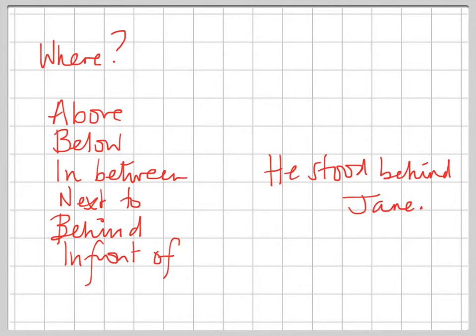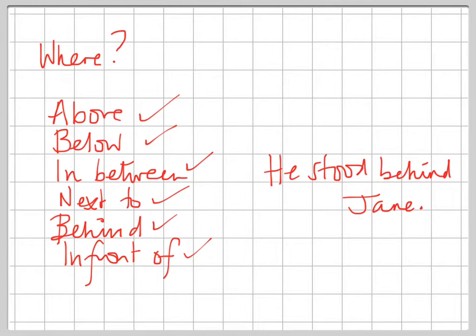The 'where' prepositions include words like above, below, in, between, next to, behind, and in front of. Normally you state where something is compared to another object — for example, 'he stood behind Jane,' where 'behind' is the preposition and Jane is the other object being stood behind.